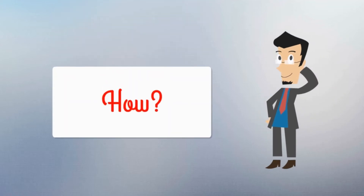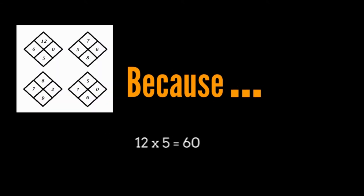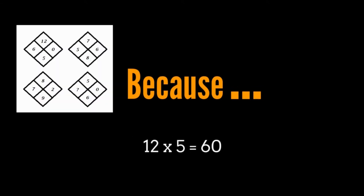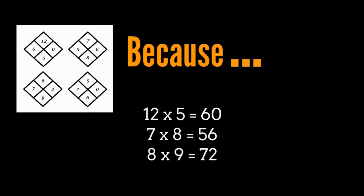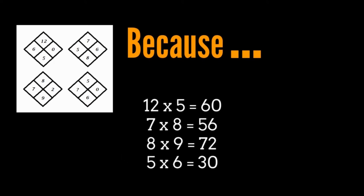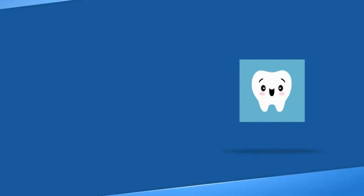How? This is because: 12 times 5 is 60, 7 times 8 is 56, 8 times 9 is 72, 5 times 6 is 30.